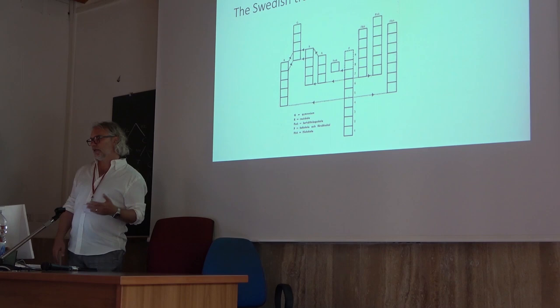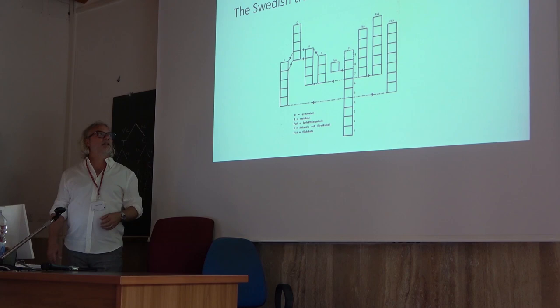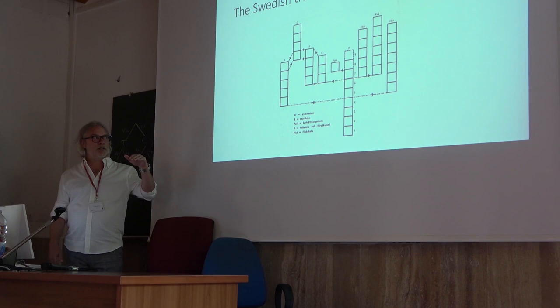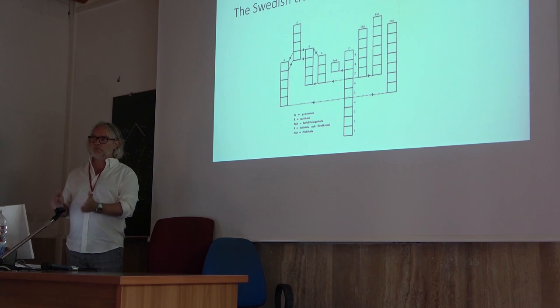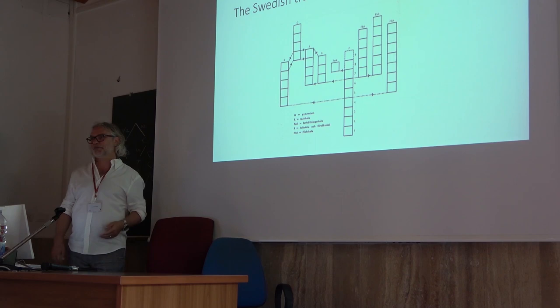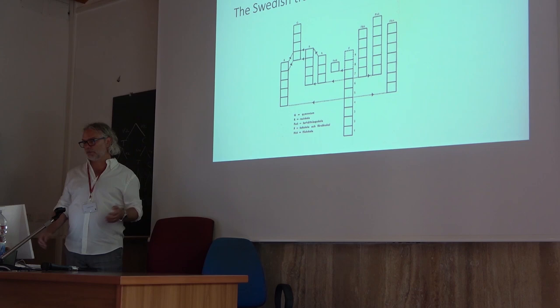This was the case when our case started: the very complex tract school system, with early differentiation where after four grades you would choose a more theoretical path or a practically oriented path, a longer school path or a shorter one. The idea with the comprehensive school was to simplify this, both for administrative purposes and for justice and equality purposes.